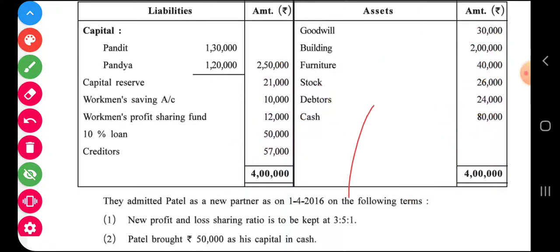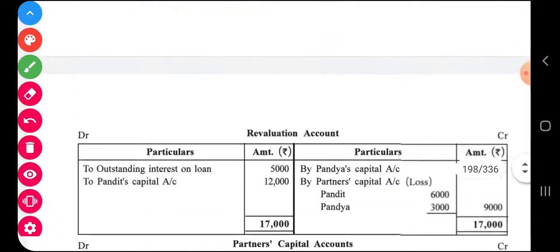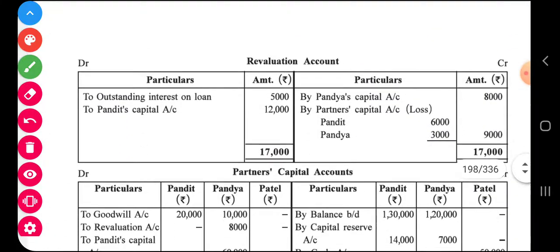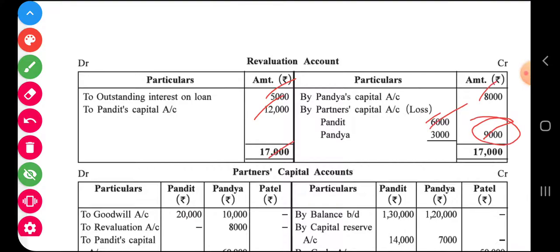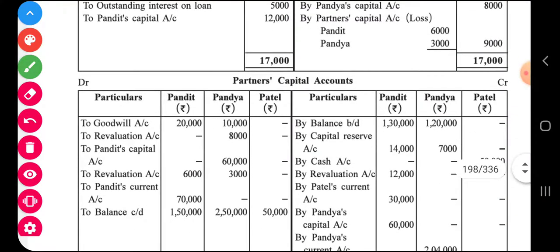After recording all entries and closing the revaluation account, the debit side of revaluation is greater. After netting, a loss of nine thousand results, which is transferred to old partners' capital accounts in the old ratio — six thousand and three thousand respectively.